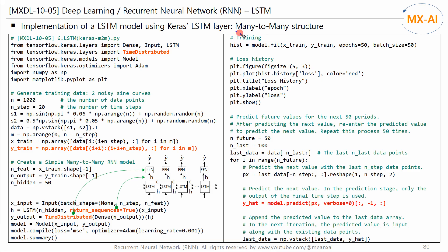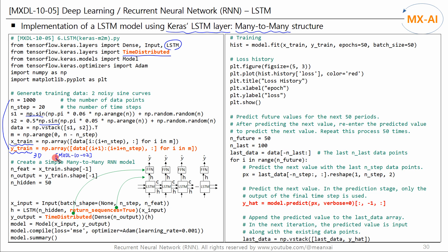Finally, let's implement a many-to-many LSTM model using Keras' LSTM class. Import the LSTM and TimeDistributed classes. Generate a dataset for a many-to-many LSTM model — this data, like the previous code, consists of two sine curves with different frequencies. X-train has a 3D structure just like the previous code, but this time Y-train also has a 3D structure because this is a dataset for a many-to-many model. Please refer to the second video in this series for how to construct this dataset.